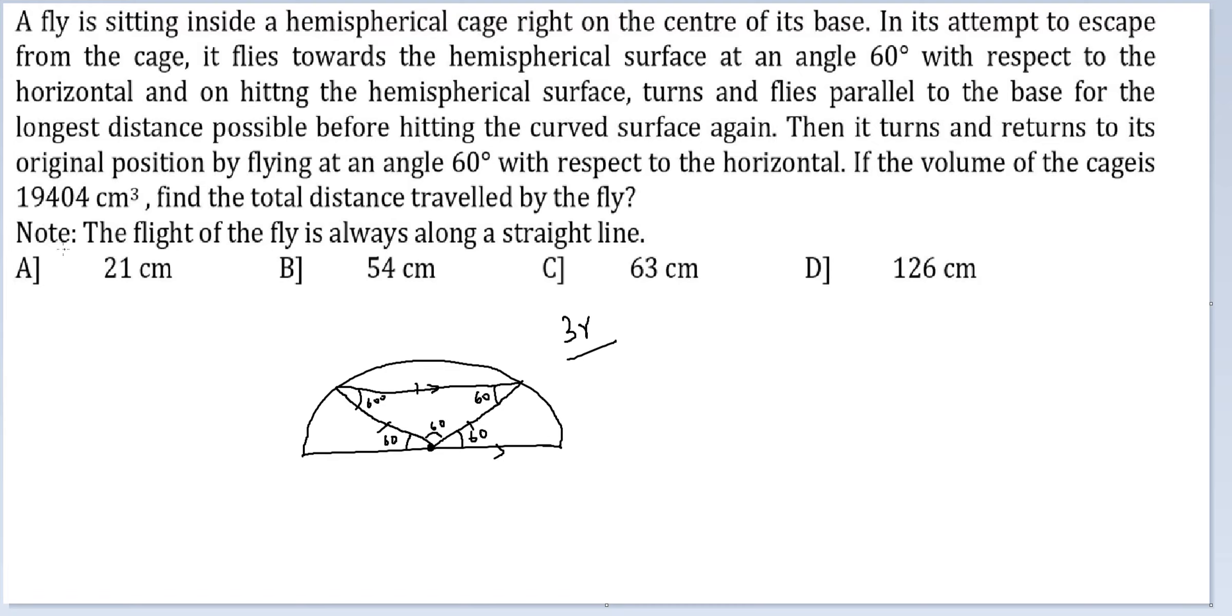Now, we are told the volume of the hemisphere is this. So, 2 by 3 into 22 by 7 into R cubed is equal to 19404. Okay, let's cancel stuff out. I can get 2 cancelled from here. What do I get?